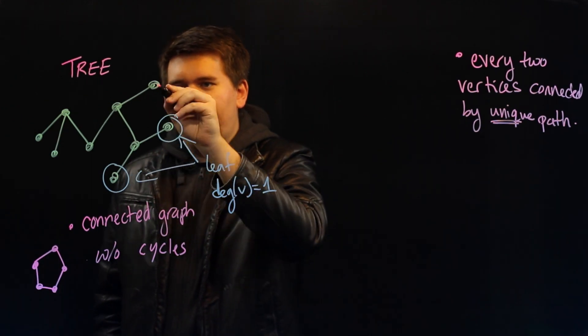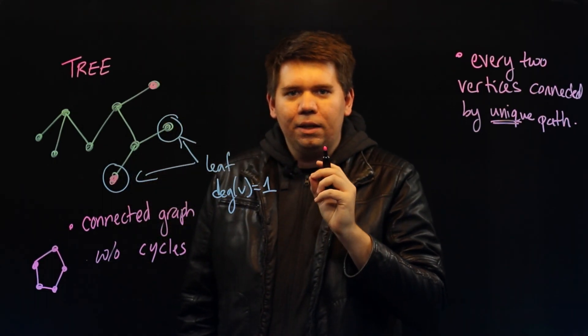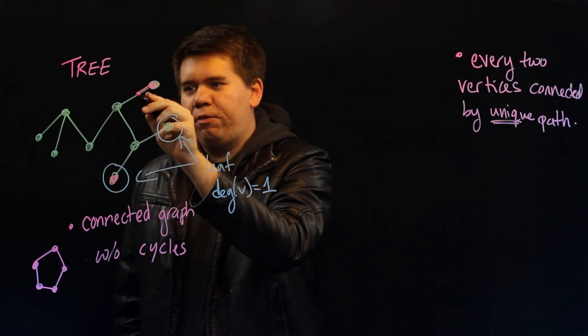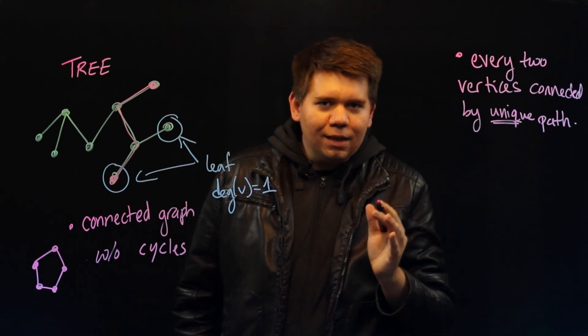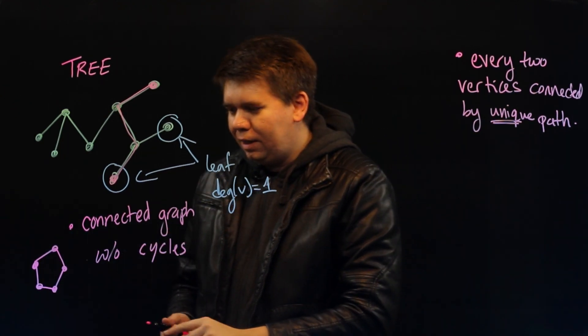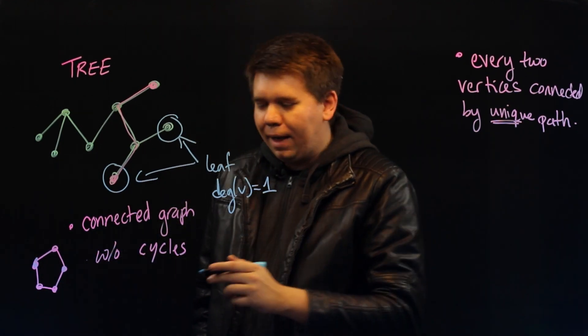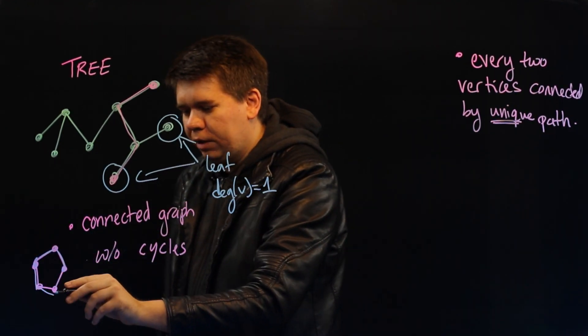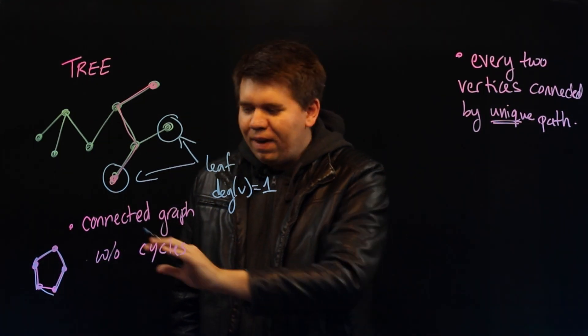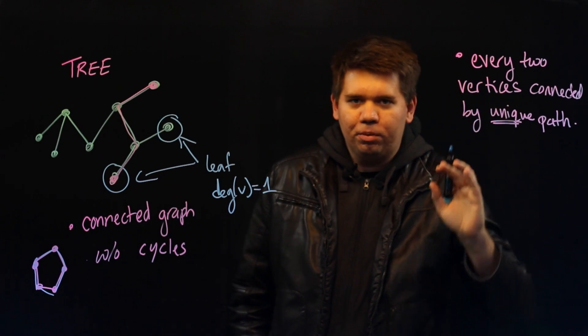For instance, if I pick these two vertices, there is exactly one path that will take me from the one to the other. This is not the case in a cycle. In a cycle, if you pick two vertices, you have two paths. You can either go above or you could have gone below. And in fact, that observation is exactly the justification for this property.